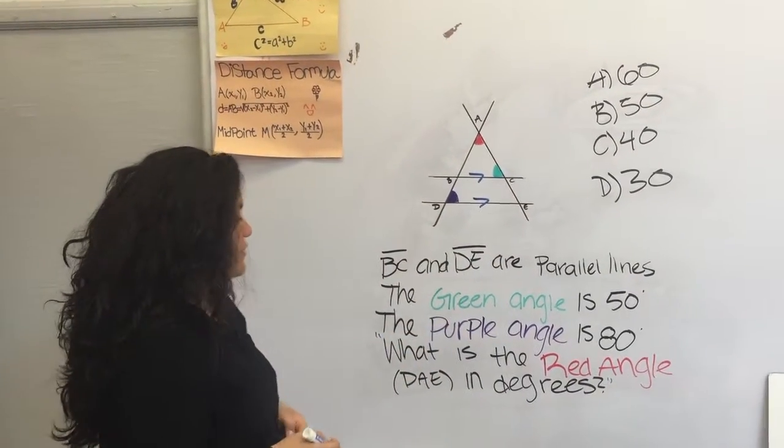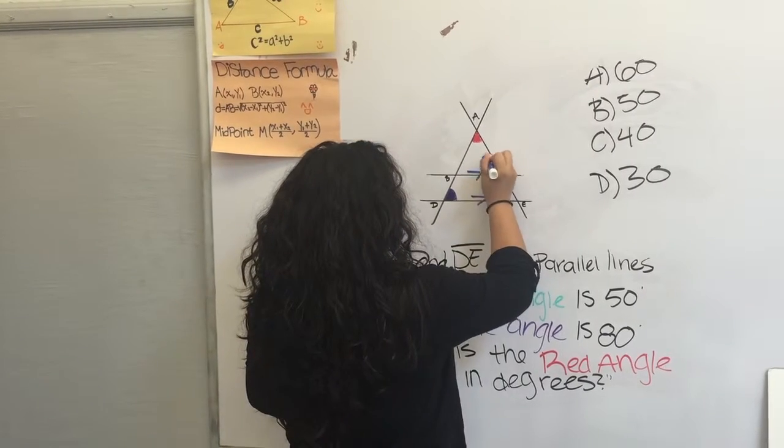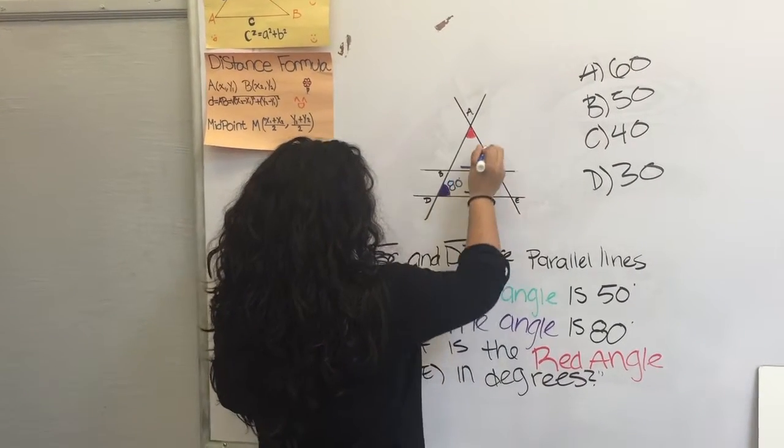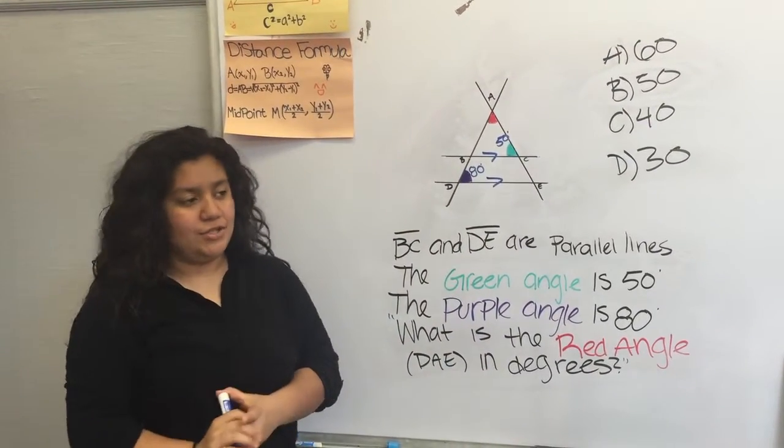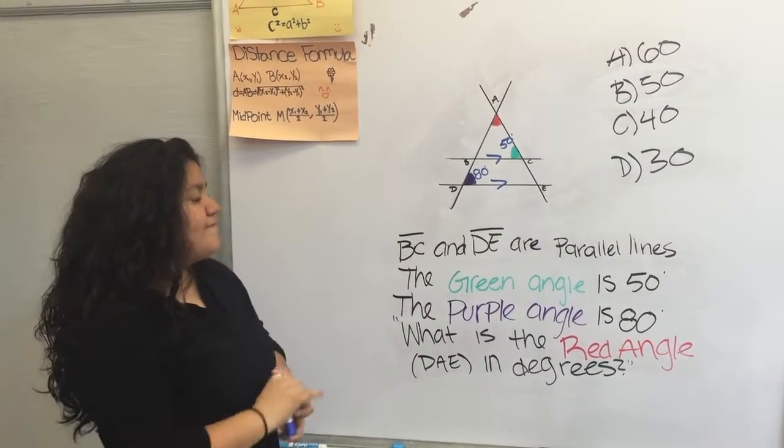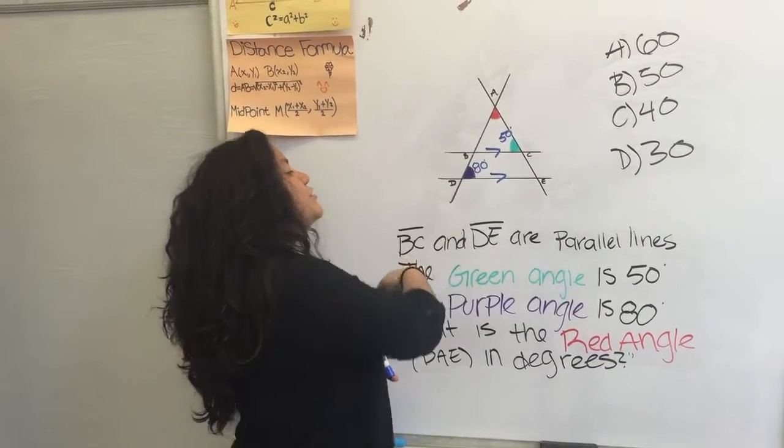The green angle is 50 degrees and the purple angle is 80 degrees. The question is asking us what is the red angle in degrees. So in order to find that out, we see that we have two parallel lines here that are cut by a transversal.